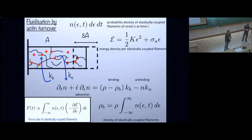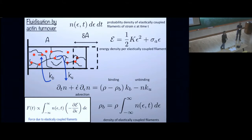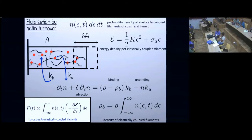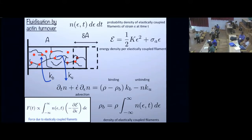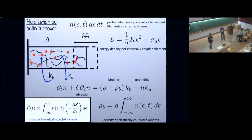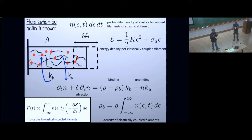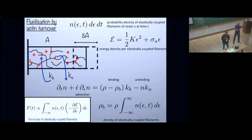Regarding actin polymerization: in this model there was no actin polymerization per se. The turnover could be either due to polymerization and depolymerization of actin, or because of filaments unbinding or being cut — there are molecules like cofilin which sever actin. The nature of the unbinding is still unclear: what contribution comes from depolymerization, what comes from severing, and what comes from other mechanisms.